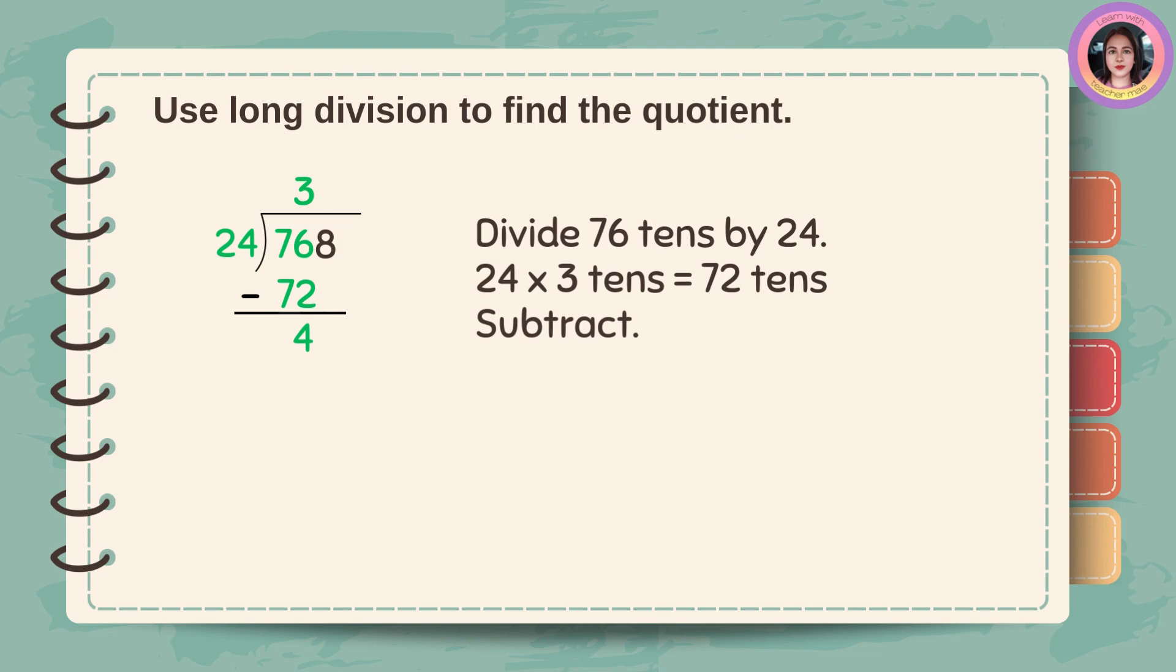Let us use long division to find the quotient. Divide 76 tenths by 24. 24 times 3 tenths is equal to 72 tenths. And then subtract. 76 minus 72 is 4.